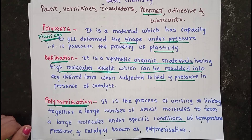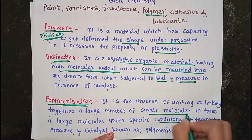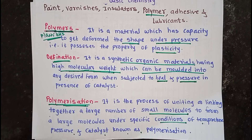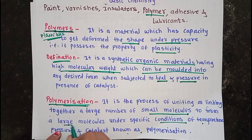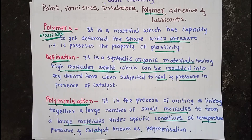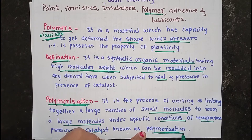In this process we unite or link a large number of small molecules. These small molecules unite together to produce a large molecule under specific conditions of temperature, pressure, and catalyst, and then the polymer is produced. This process is called polymerization.